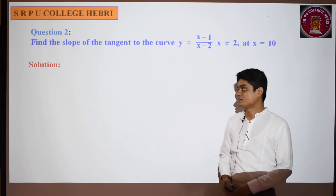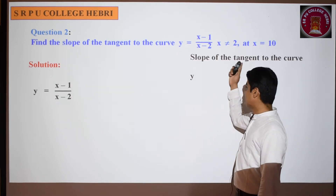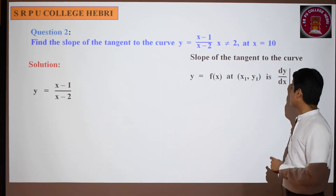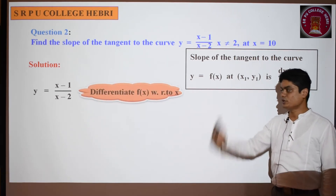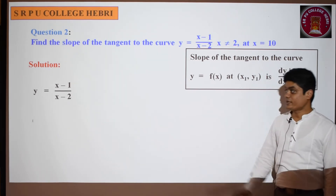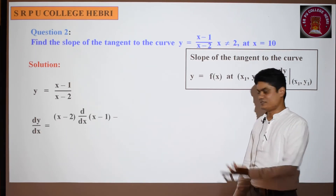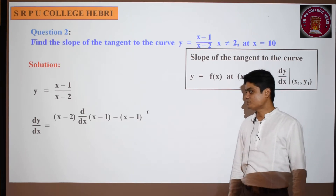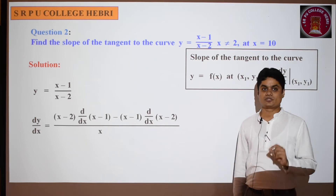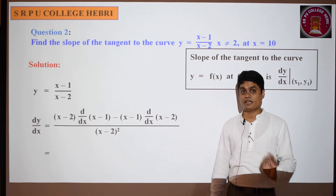You know how to differentiate this. Consider y = (x - 1)/(x - 2). The slope of the tangent is dy/dx at x₁, y₁. We differentiate using the quotient rule. So dy/dx = [(x - 2) × d/dx(x - 1) - (x - 1) × d/dx(x - 2)] / (x - 2)².